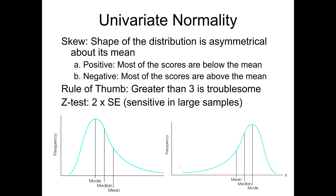I always look at where the tail is in these distributions — that tells me if it's negative or positive. When we do descriptives, we can get a number for skewness. When we look at that number, there are some rules of thumb: if it's greater than three, we might have a skewed distribution. Again, that's a rule of thumb — it's not a hard and fast rule.